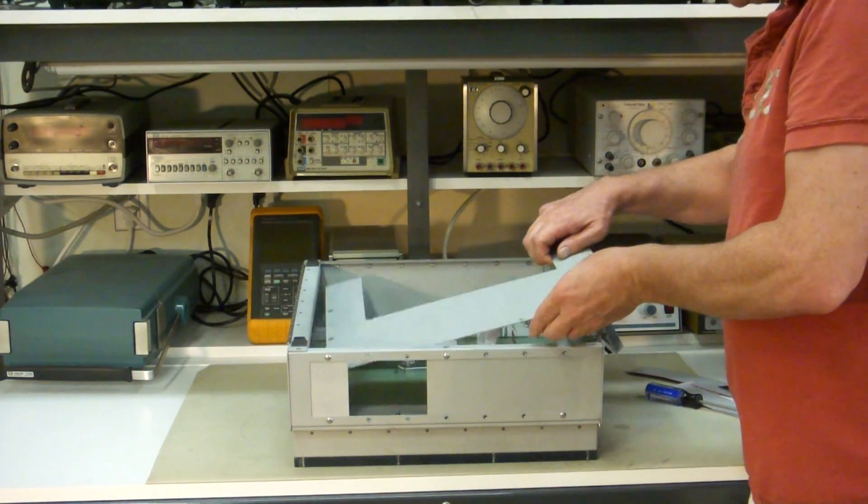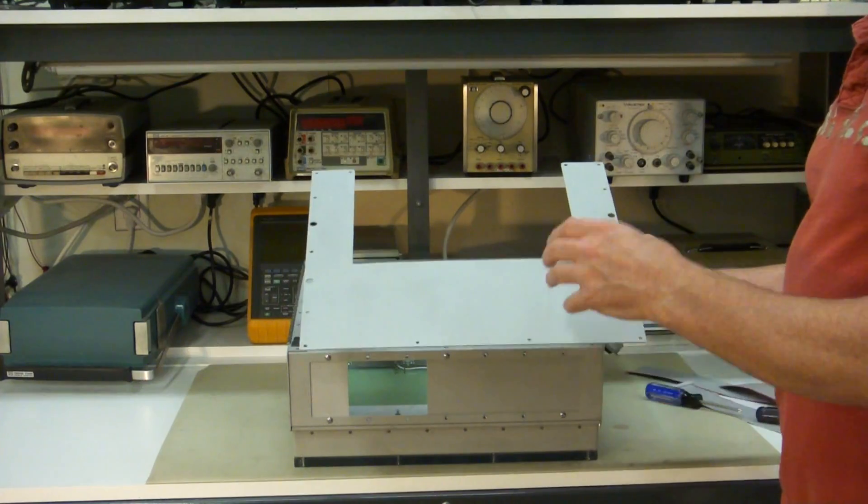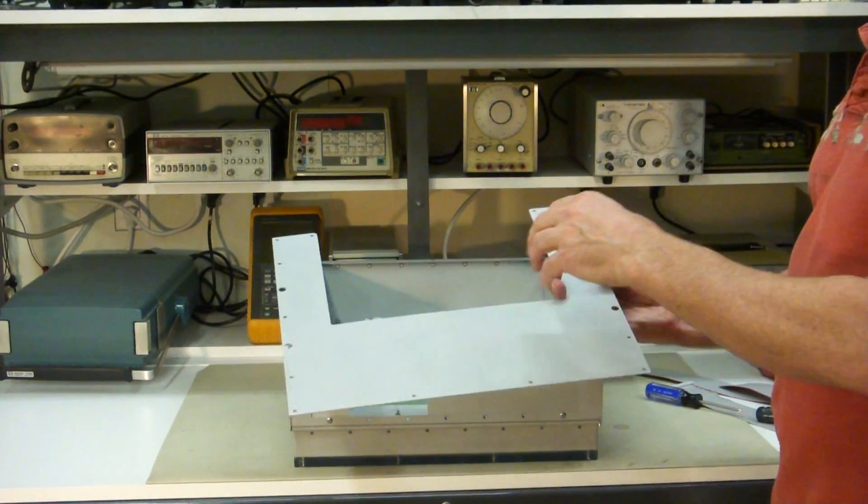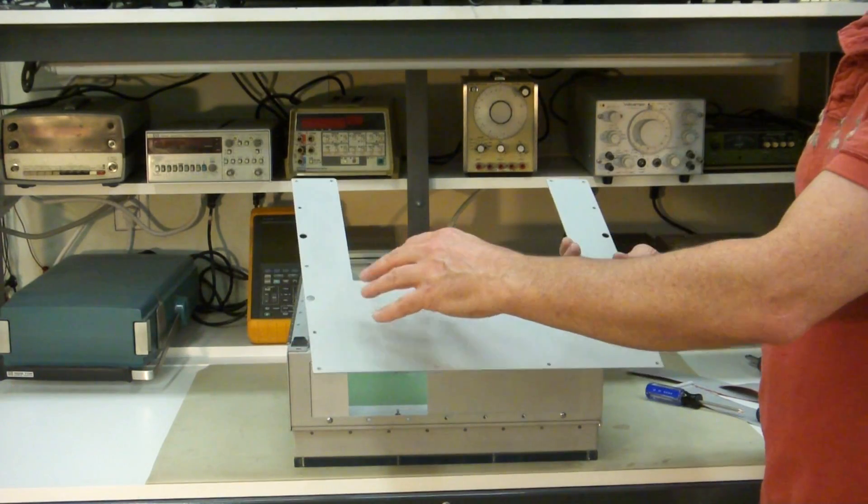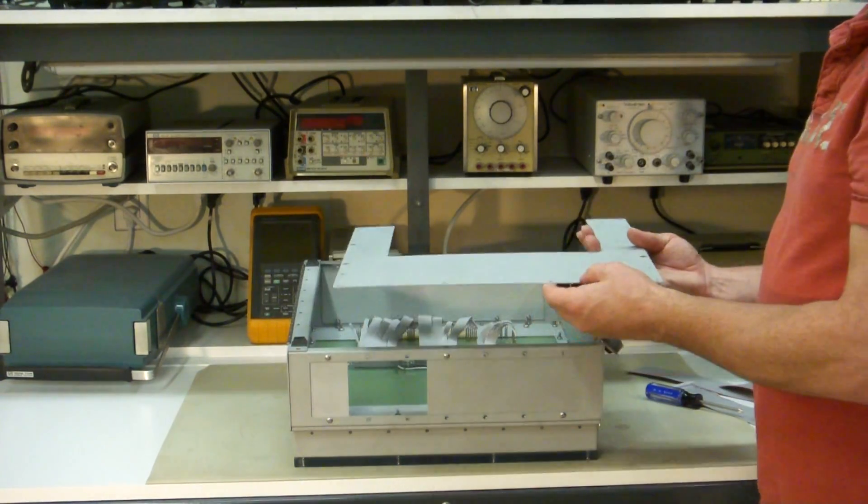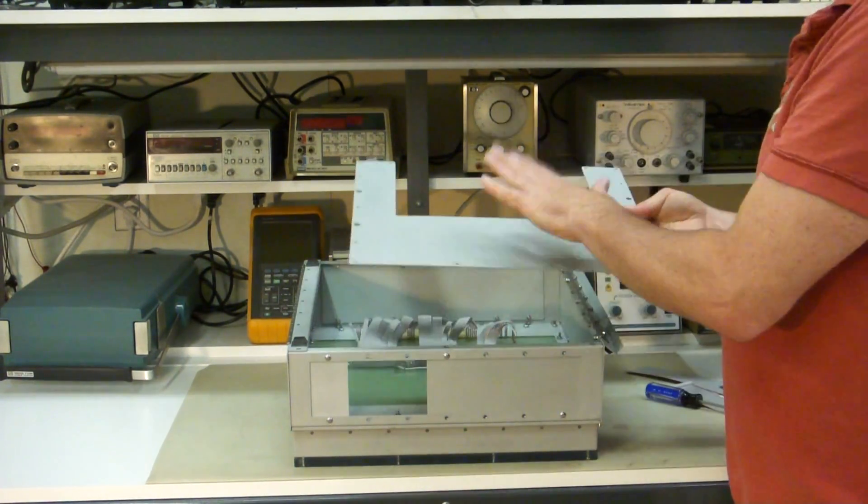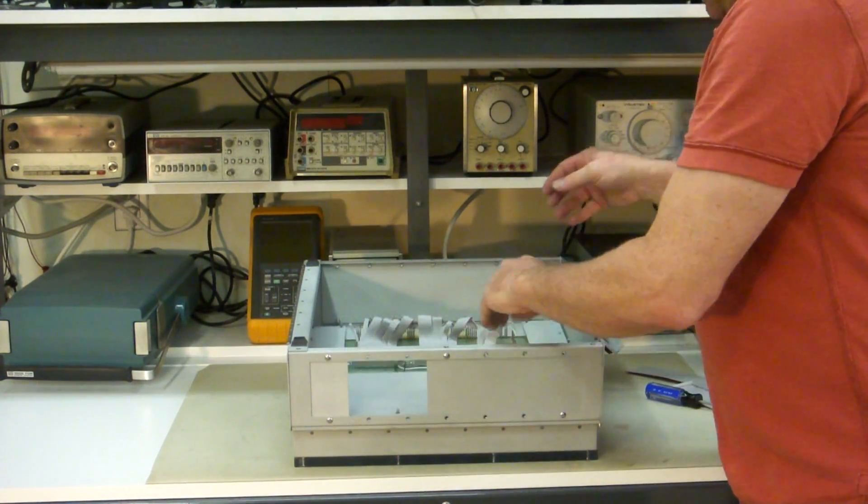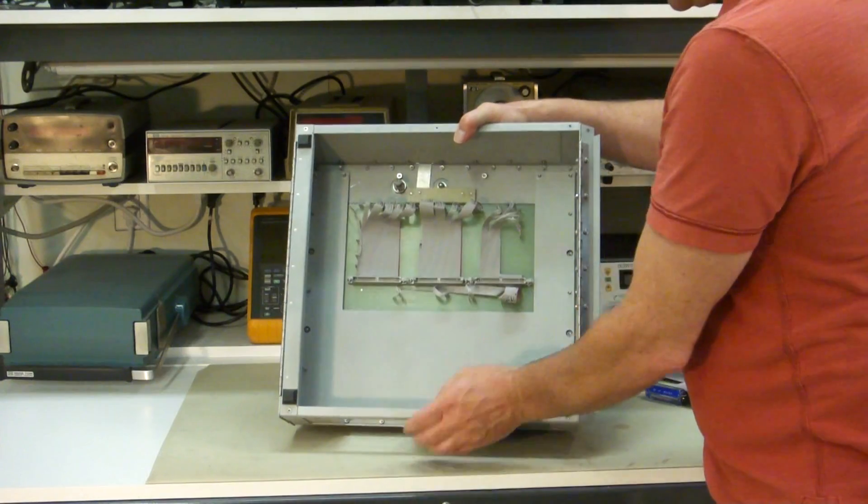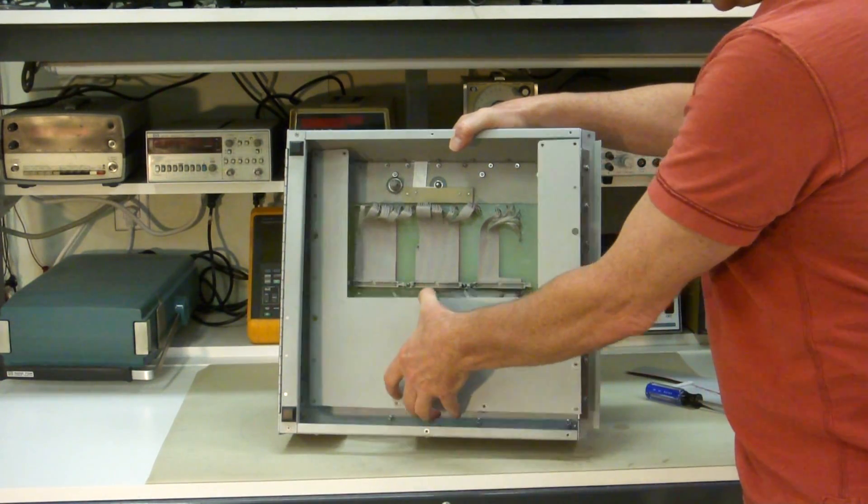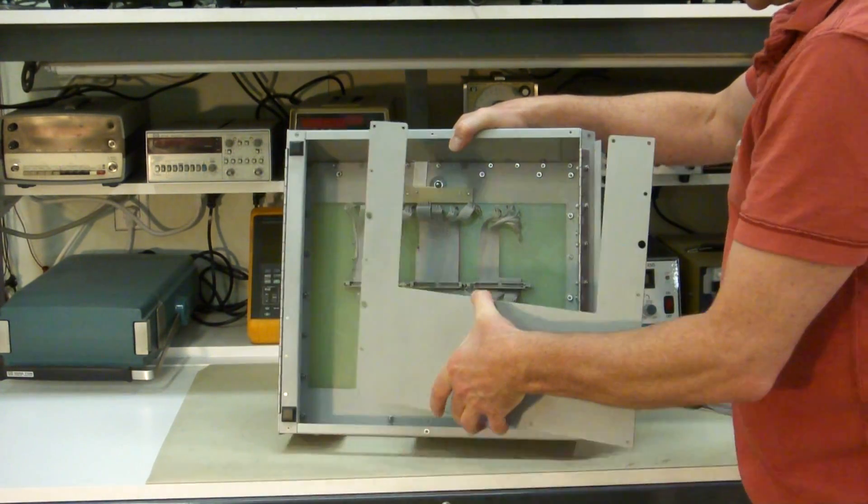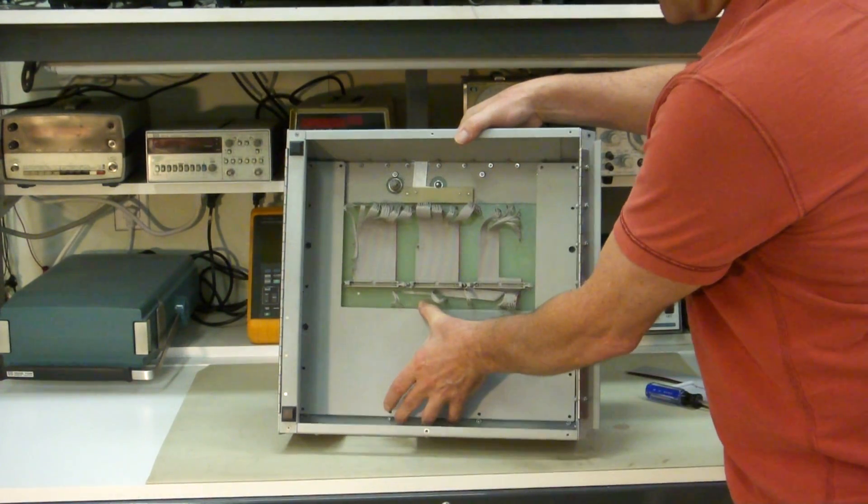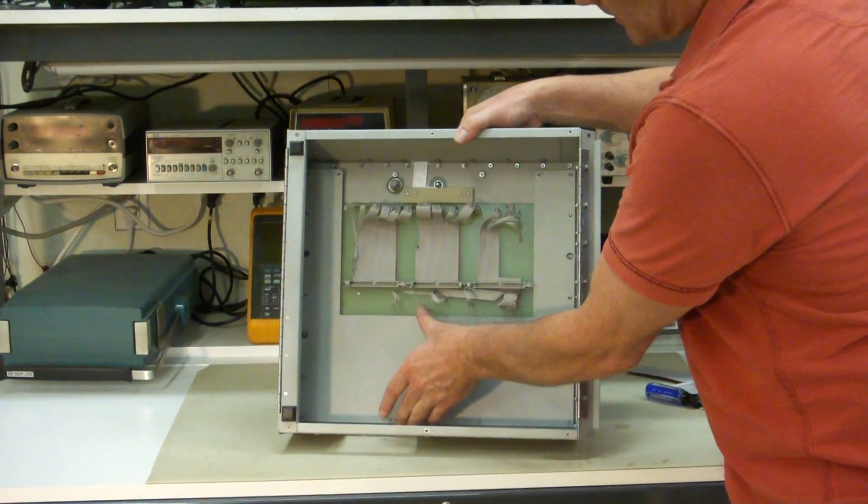Now this will come right out. Now what you can do is mount all the stuff that you wanted. A power supply maybe. Some servos. Some circuit boards. Whatever you need to mount in here. You mount on this. And then you mount this in here. It makes it real easy. So. You mount what you need on this plate. And then you put the plate back in. Just like that.